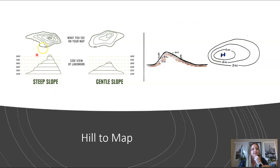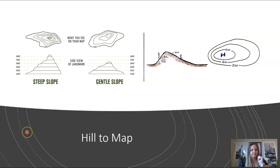Here are some other examples. On a steep slope, all of those lines are close together and there are more contour lines than on a gentle slope, where there are fewer. Another example shows a much steeper grade on the left side of the slope compared to the right, which is more gentle — that's also depicted in the map. On the left-hand side of the map, the contour lines are much closer together than on the right.